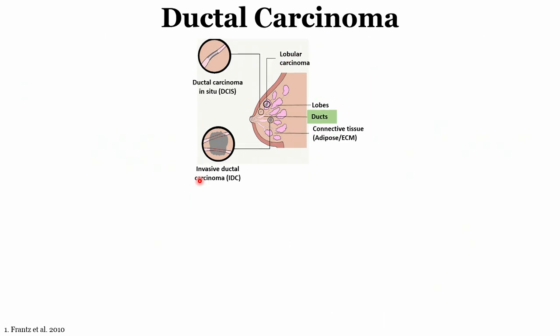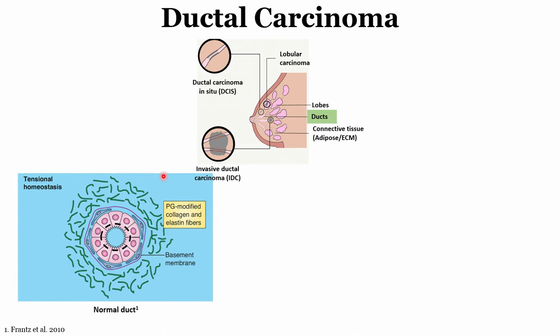Moving to understand the ducts — the anatomy of the ducts shows a circular cylindrical structure where the basal cell membrane surrounds the ducts, and through the center the milk generated by the lobes is transported to the nipple. In the normal duct profile it is nicely arranged in a circular manner, with the stress developed from the internal and outer being equal, so it maintains its circular shape.